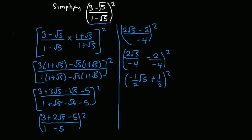Now we are going to square this expression. Upon expanding, I'm going to use the principle (a + b) squared equals a squared plus 2ab plus b squared. In this case, our a is negative (1/2) root 5 and our b is 1/2.